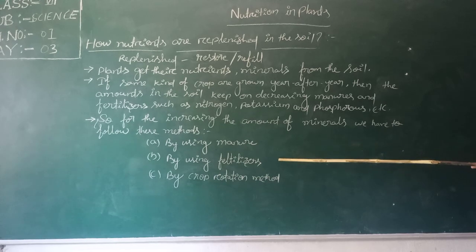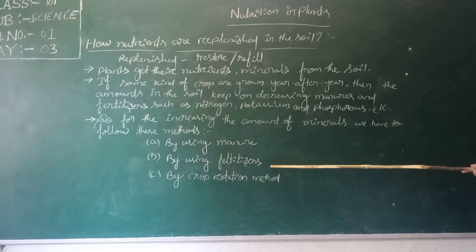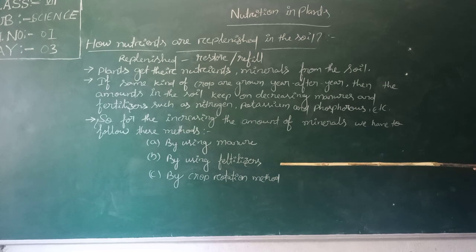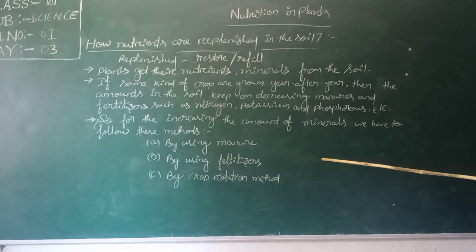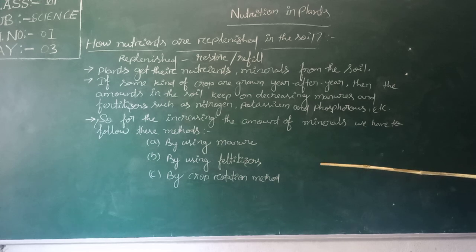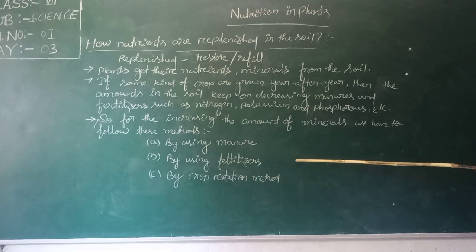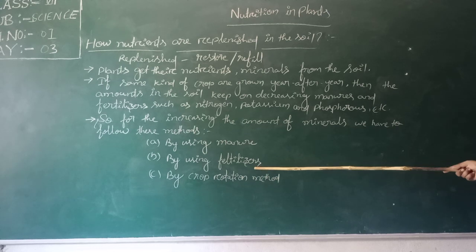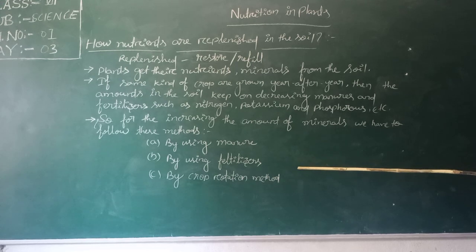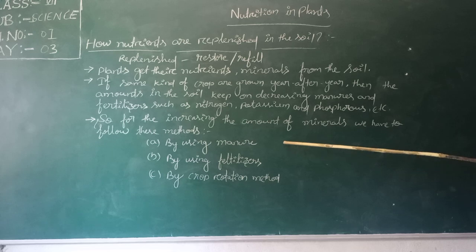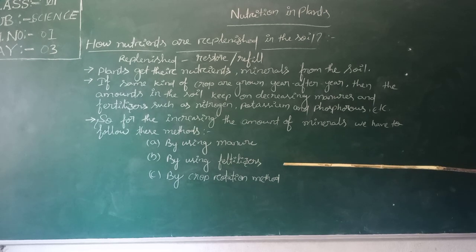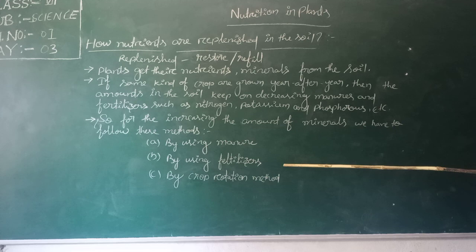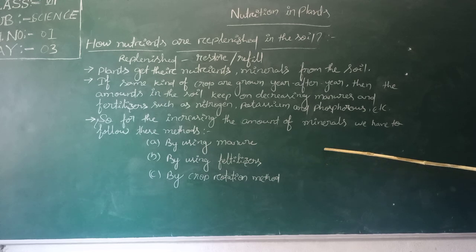By using fertilizers — fertilizers are chemical products which are manufactured. These can be added to the soil to increase the fertility, similar to manure. But unlike manure, which is natural, fertilizers are manmade and artificial or chemical products. Both methods increase the fertility power of the soil.